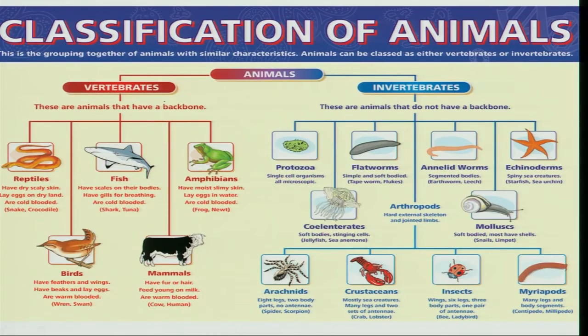Now, what exactly is the position of insects in the animal kingdom? The animal kingdom can be broadly categorized as vertebrates and invertebrates. Insects, which come under the phylum Arthropoda, mainly belong to the invertebrate group, and share it with other sister groups such as arachnids, crustaceans, and myriapods.